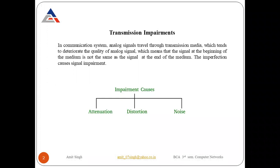What is the meaning of transmission impairments? The first word is transmission — whenever we send data, the data is in transmission form when it is received by the receiver. Impairment means when we lose something. In the case of transmission impairments, the data is sent in the form of signals, meaning there is a loss of signals. In the communication system, analog signals travel through the transmission media, which tends to deteriorate the quality of the analog signals — the signals at the beginning of the medium are not the same as at the end. The imperfection causes signal impairments.